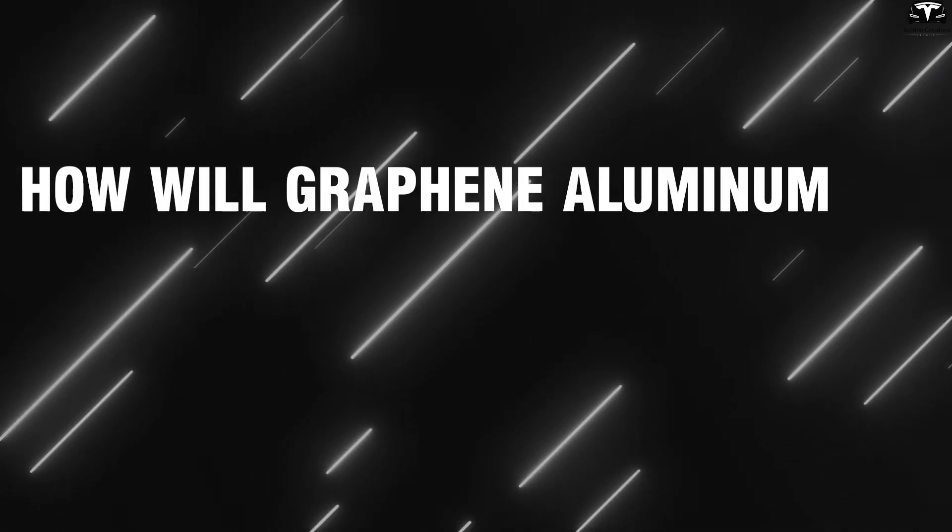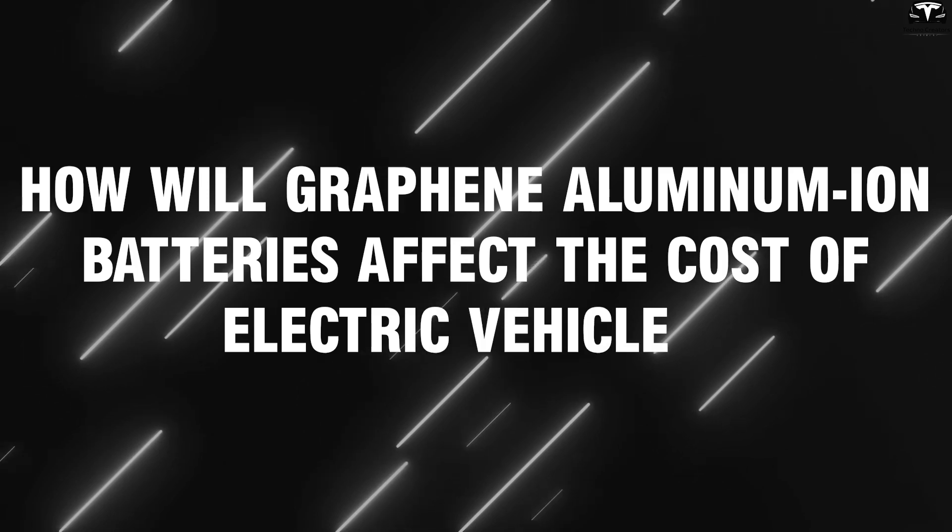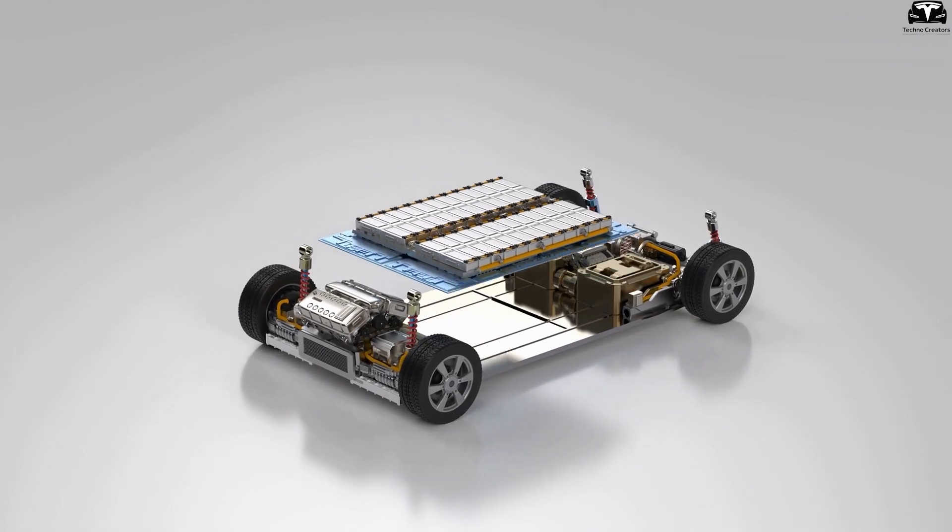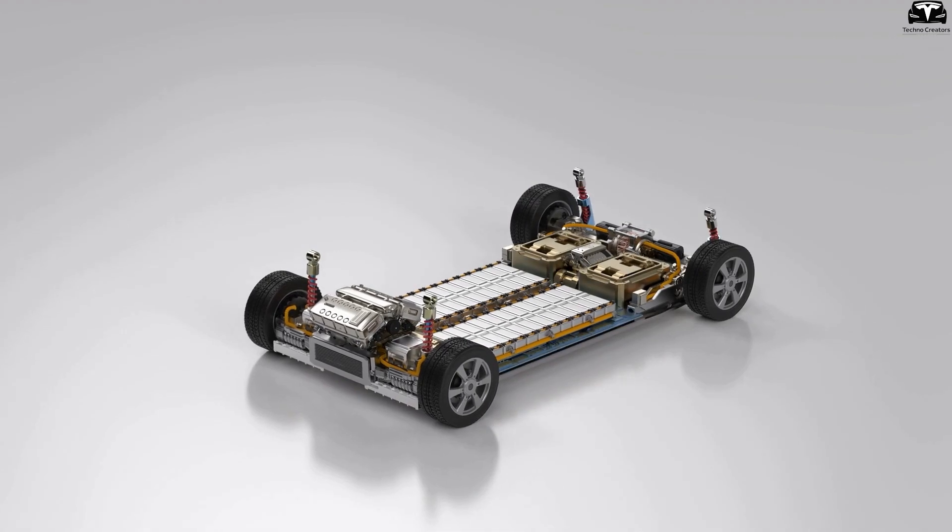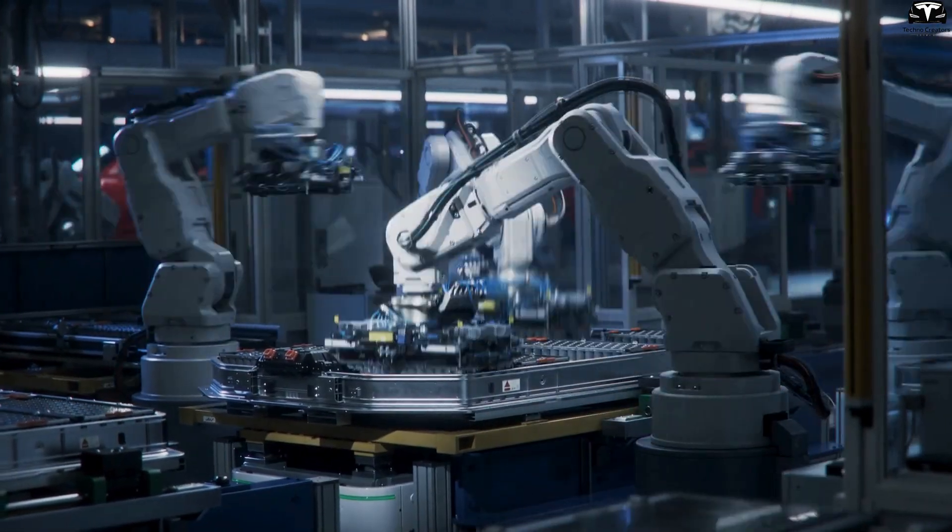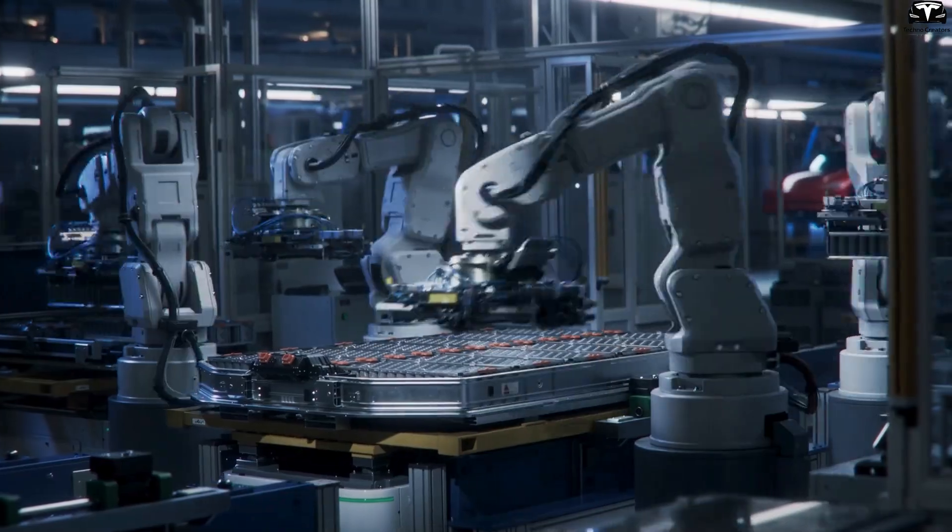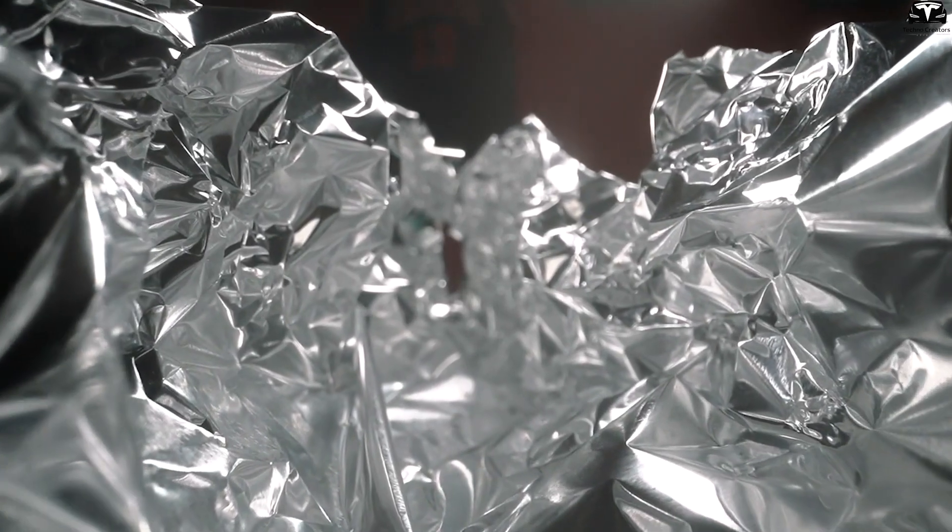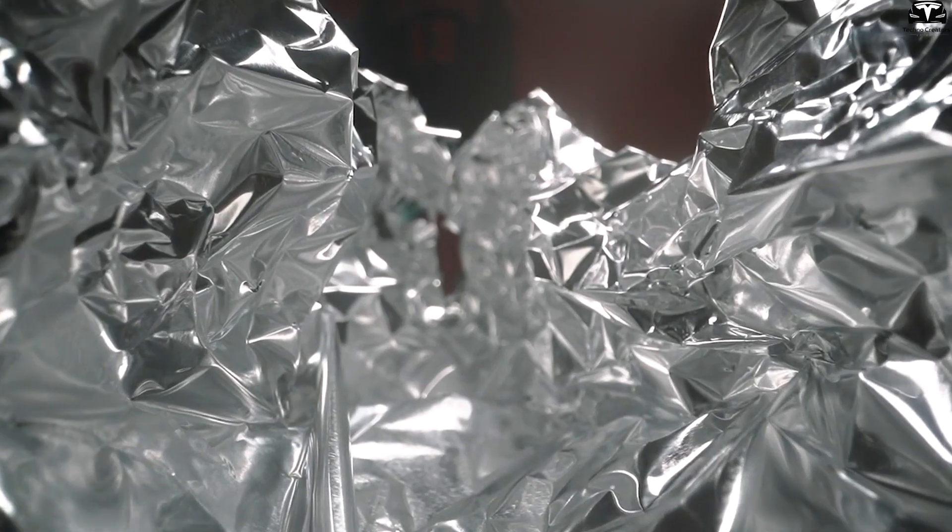How will graphene aluminum-ion batteries affect the cost of electric vehicles? Graphene aluminum-ion batteries are considered one of the most promising battery technologies because they can significantly reduce production costs compared to traditional lithium-ion batteries. The main raw material of this battery is aluminum, a very common and inexpensive metal, unlike the costly and rare material used in current batteries.